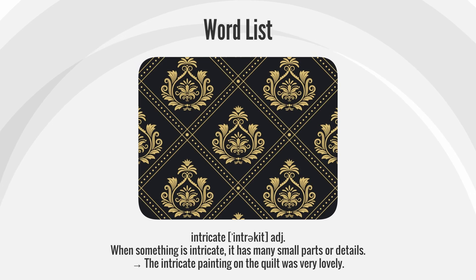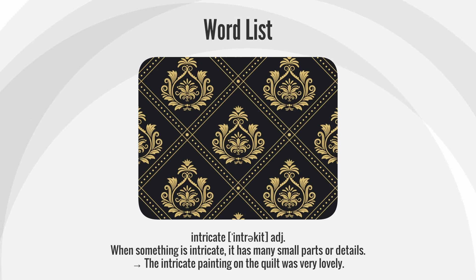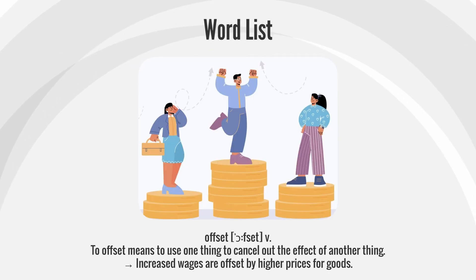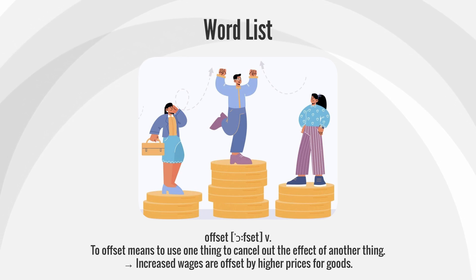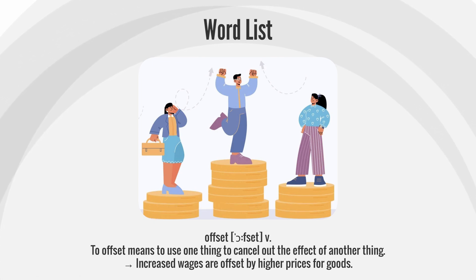Intricate — when something is intricate, it has many small parts or details. The intricate painting on the quilt was very lovely. Offset — to offset means to use one thing to cancel out the effect of another thing. Increased wages are offset by higher prices for goods.